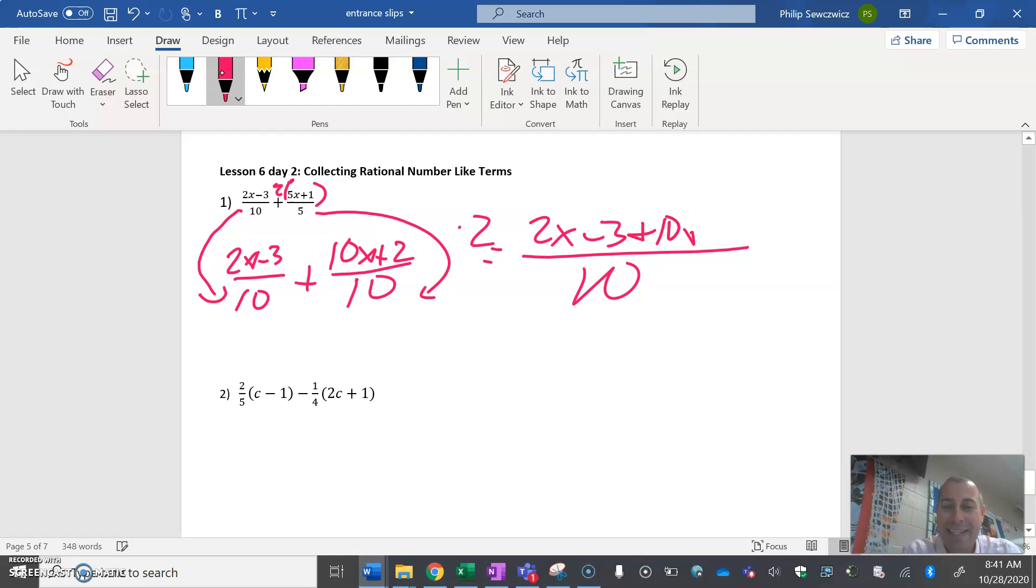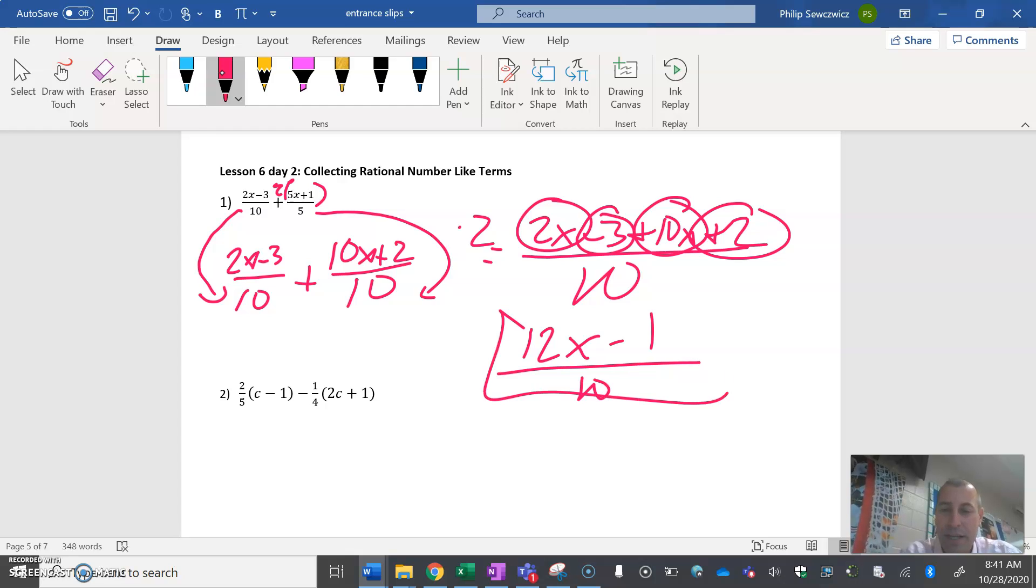Going from left to right: minus three, plus ten x. We're going to combine like terms. I see 2x, I see 10x, so that's 12x. I see negative three and positive two, that's negative one over ten. There's our official winning answer: 12x minus 1, all divided by ten.